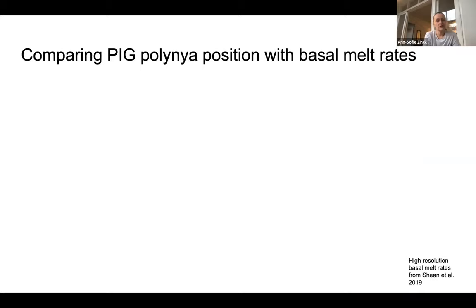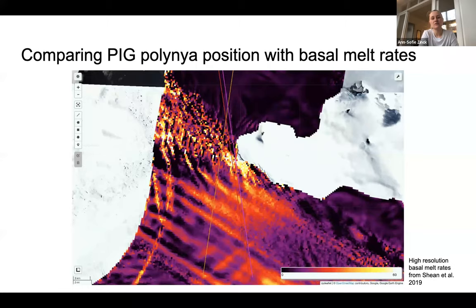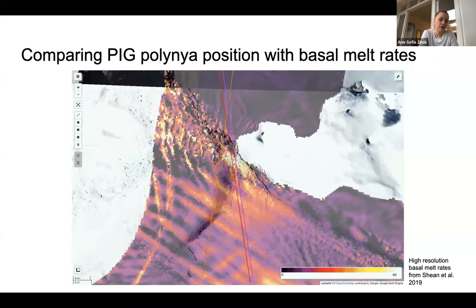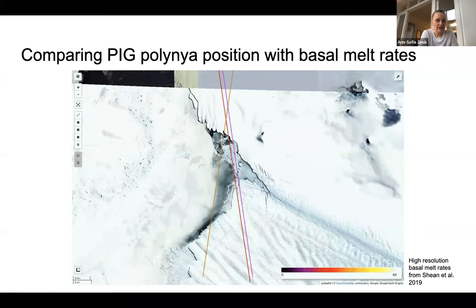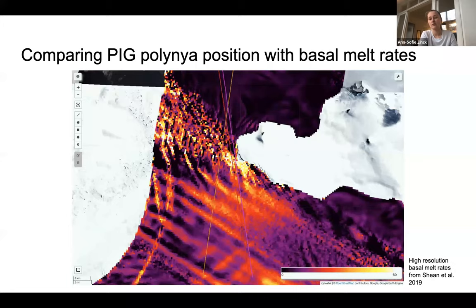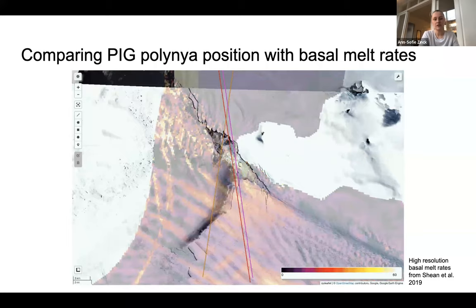Here we have a look at how the basal melt rate of Pine Island Glacier compares to the polinia. These are high-resolution basal melt rates from David Sheen. We can really see that there are extremely high basal melt rates just where the polinia is located, which tells us something about how this polinia has been formed or at least how it is being sourced.